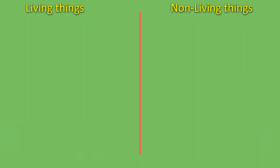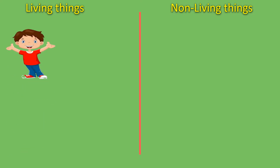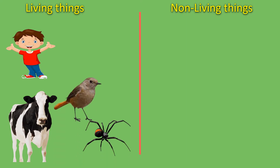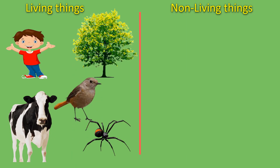We can see so many things around us. Some of the things are alive — they are called living things. For example, human beings, animals, birds, insects and trees.